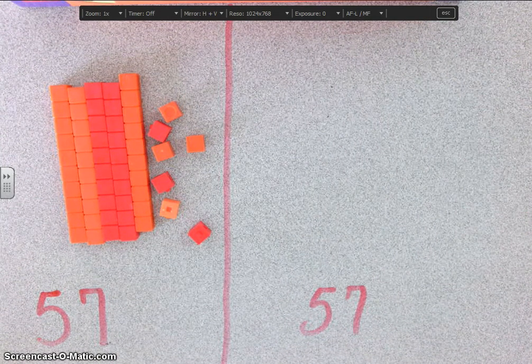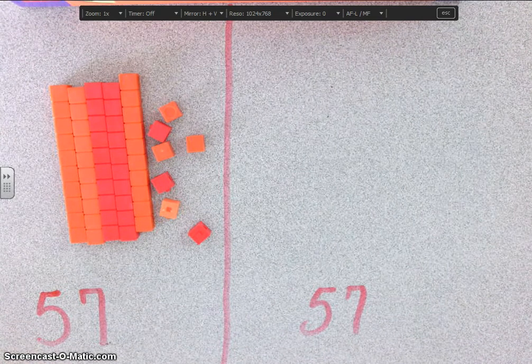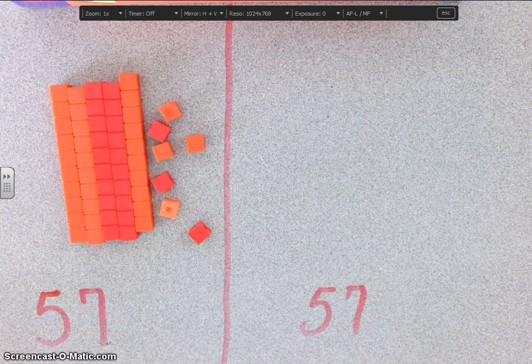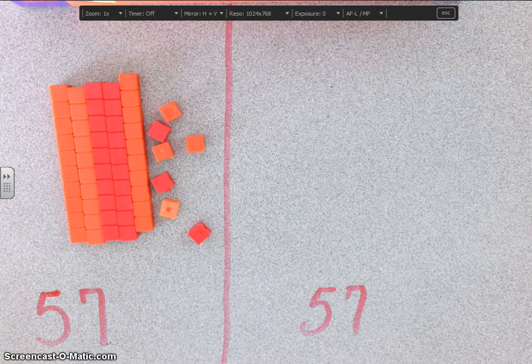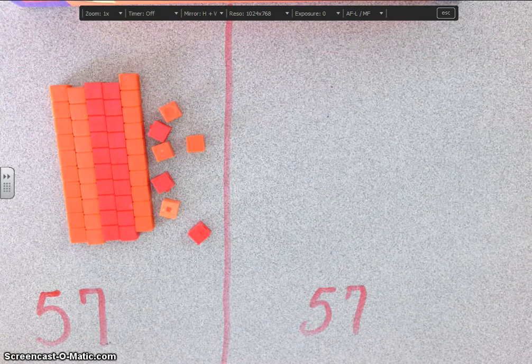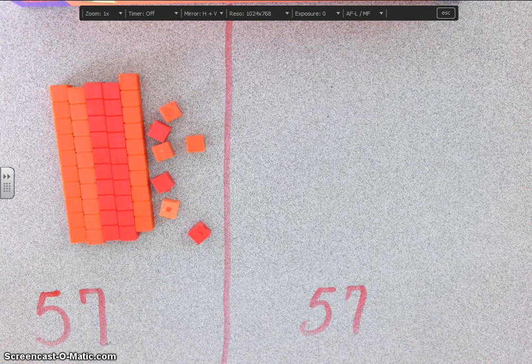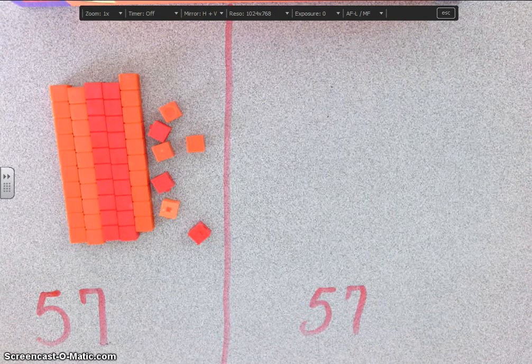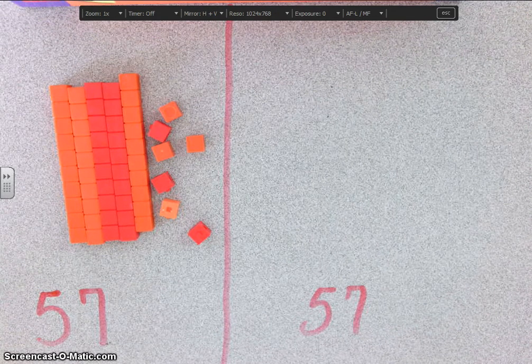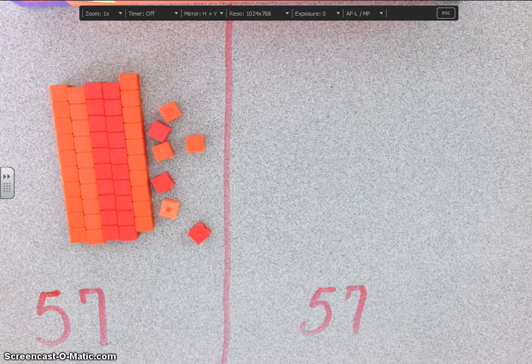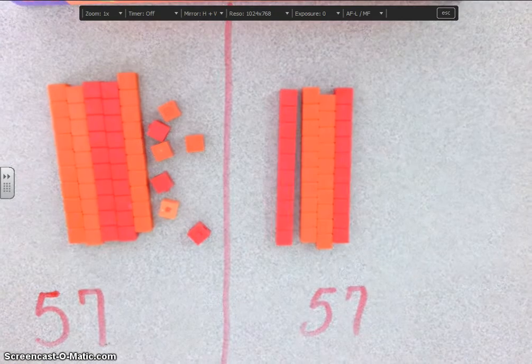Who can tell me what I can do to make fifty-seven a different way? And you have to speak nice and loud so the microphone can hear you. Alright, Nouria, what can I do? You could get six, seven, seven tens again. Seven tens? We want fifty-seven. Oh, I mean, five.